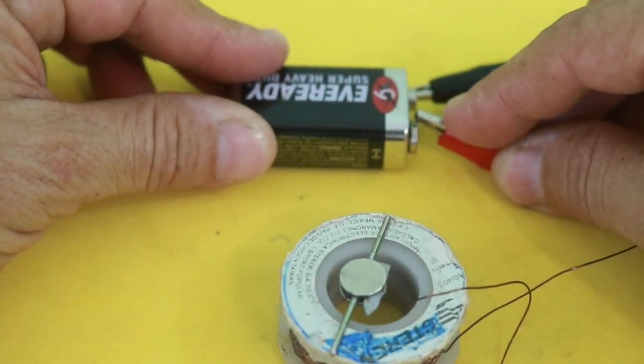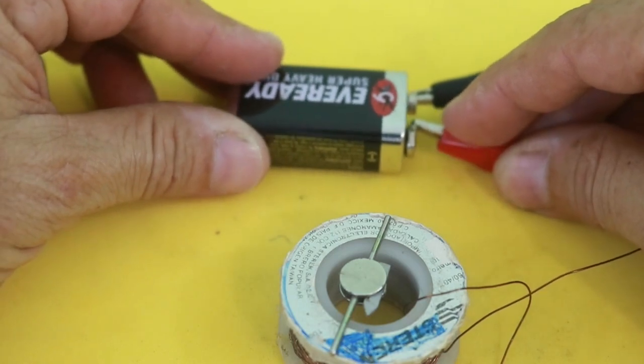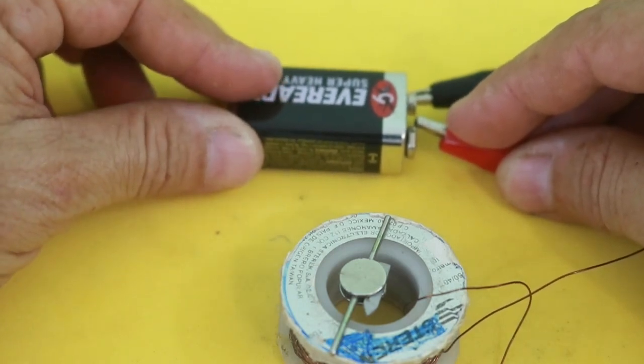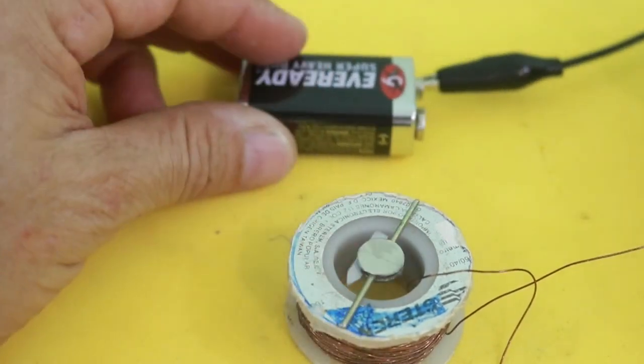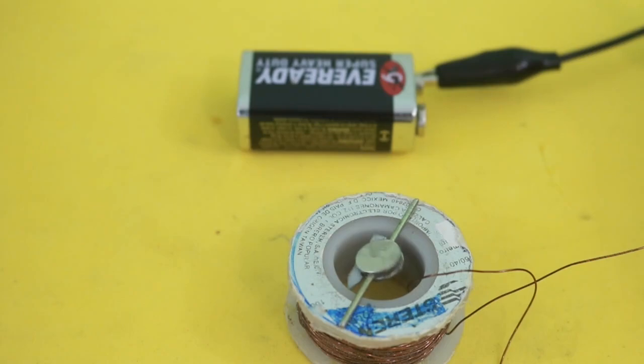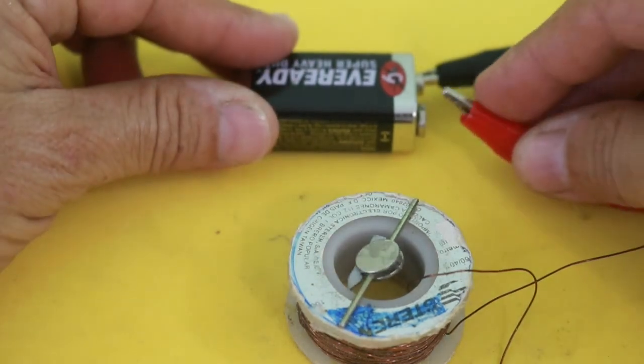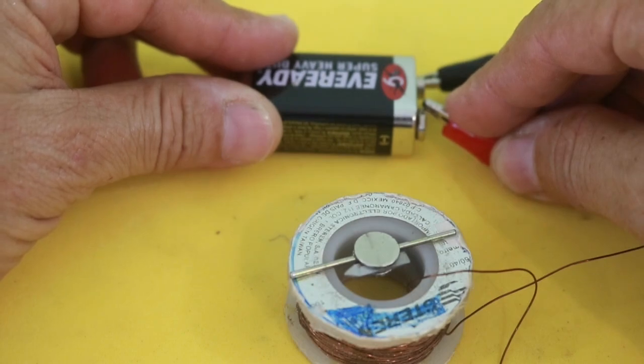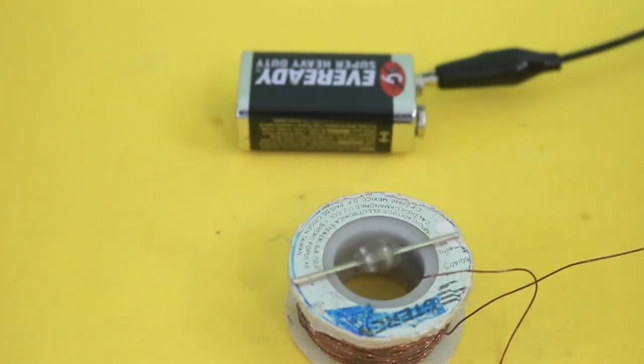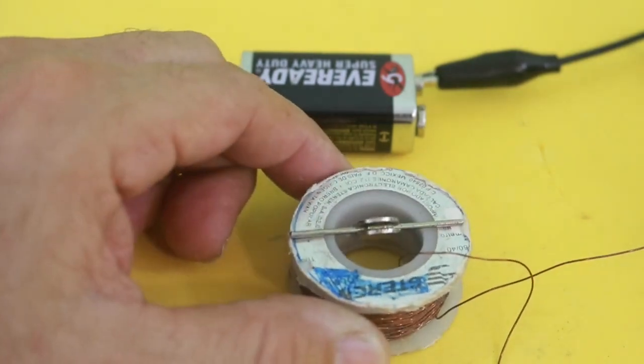You can see how the magnet rotates to remain horizontal. Without the field, the magnet returns to its rest position. Let's see again. It is aligned with the magnetic field of the coil and now returns to its position.